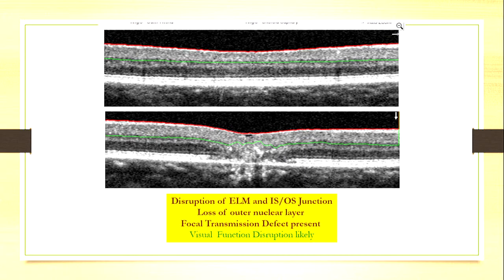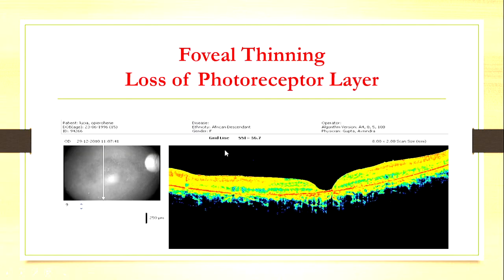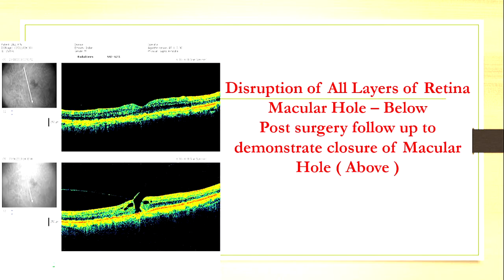So if you find a visual deficit and the patient is complaining, this is why he's complaining. Even in this case, otherwise it looks like the foveal contour is there, but if you look at the fovea there is thinning — the photoreceptor layer has been lost. Foveal atrophy is occurring. This would happen in patients who are having early geographic atrophy, and these patients will also have an effect on their vision.